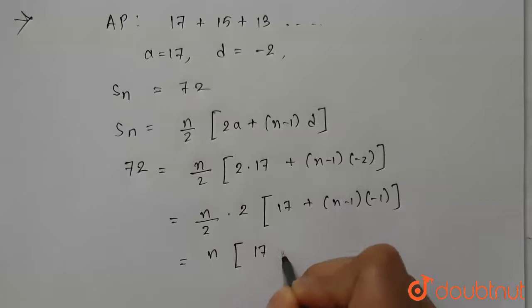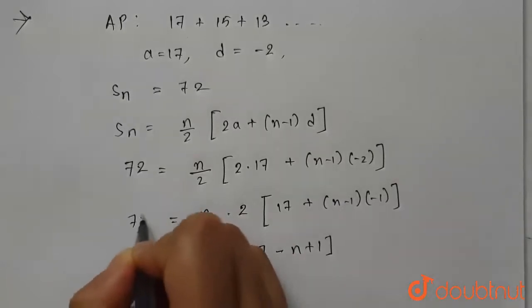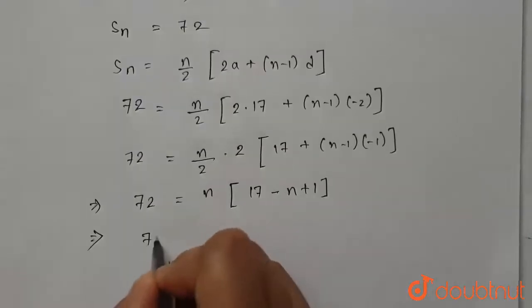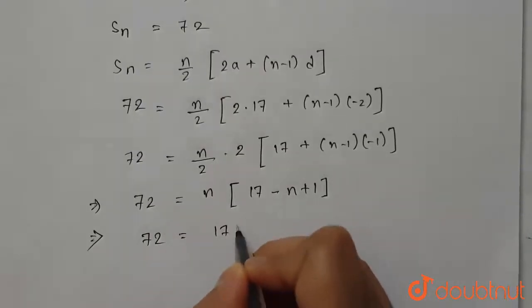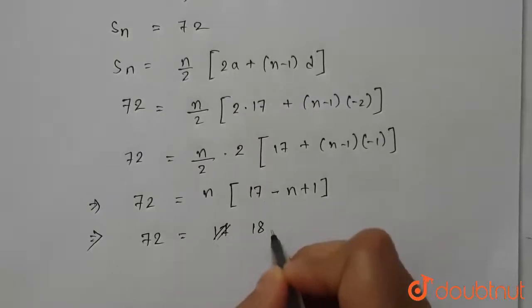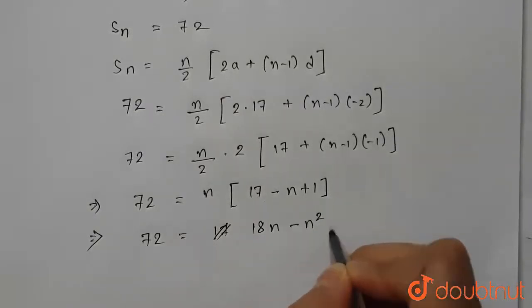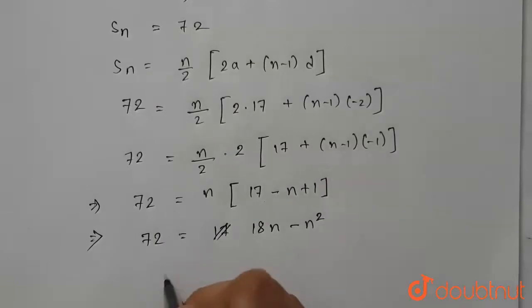From here we get 72 = n × [17 + 1], so 18n - n². So we have 18n - n² - 72 = 0.